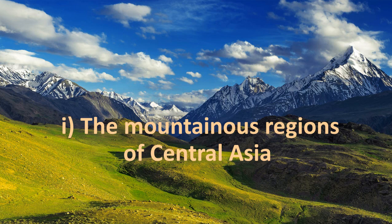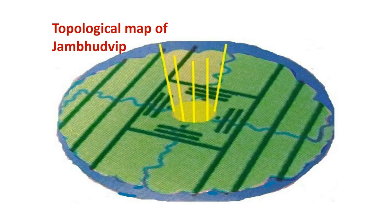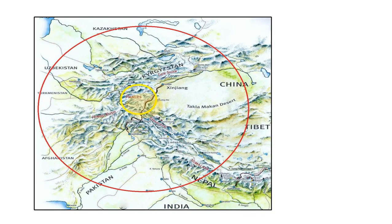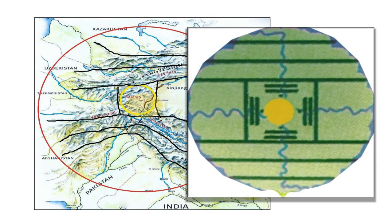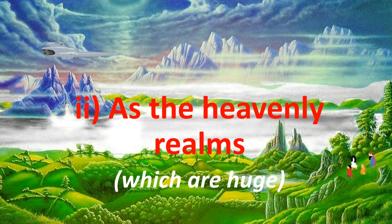Let's look at those models briefly. Model one: the mountainous regions of Central Asia. There are mountains and rivers, and in the centre the golden Mount Meru. A topological map of Jambodvipa, with black lines for mountains and blue for rivers. The yellow lines represent the perimeter of Mount Meru. Focusing on the Central Asian mountain regions of the earth — put it topologically, and see how it matches the topological map of Jambodvipa. Sadaputadas even compares the Bhagavatam names for those mountain ranges with modern names, though they're known very differently today.